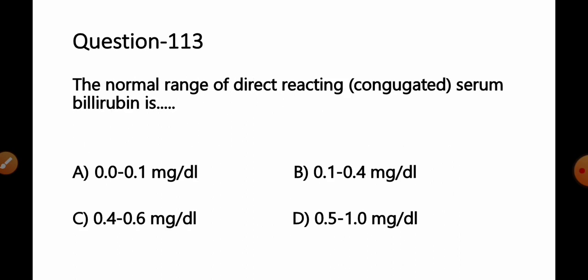Move to the next question number 113. The normal range of direct reacting or conjugated serum bilirubin is option A. 0.0 to 0.1 mg per deciliter. B. 0.1 to 0.4 mg per deciliter. C. 0.4 to 0.6 mg per deciliter. D. 0.5 to 1.0 mg per deciliter. This is one of the repeatedly asked questions for the direct bilirubin or total bilirubin.